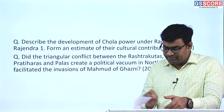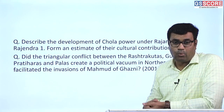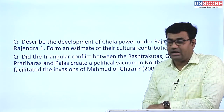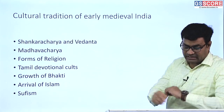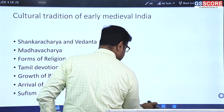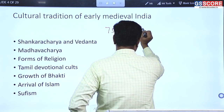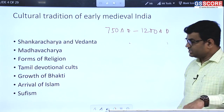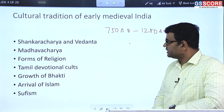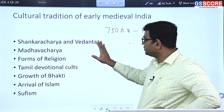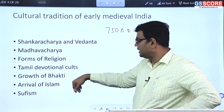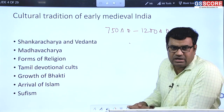Within early medieval India, another topic mentioned by UPSC is cultural traditions from 750 AD till 1200 AD. In cultural traditions, the major development took place in philosophy. The most prominent philosopher was Shankaracharya, who belonged to the 9th century, followed by Ramanuja and Madhavacharya. Other important cultural developments include Tamil devotional cults, the growth of the Bhakti movement, and the arrival of Islam and Sufism.